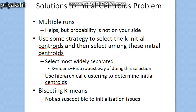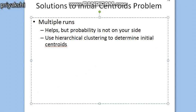Generally, whenever we choose the initial centroid we do so randomly, but randomly selected initial centroids may be poor. One popular solution to address the initial centroid problem is to perform multiple runs, each with a different set of randomly chosen initial centroids, and select the set of clusters with the minimum sum of squared error. Another effective method is to take a sample of points and cluster them using a hierarchical clustering technique. K clusters are extracted from the hierarchical clustering and the centroids of those clusters are used as the initial centroids. This approach often works well but is practical only if the sample and K are relatively small.